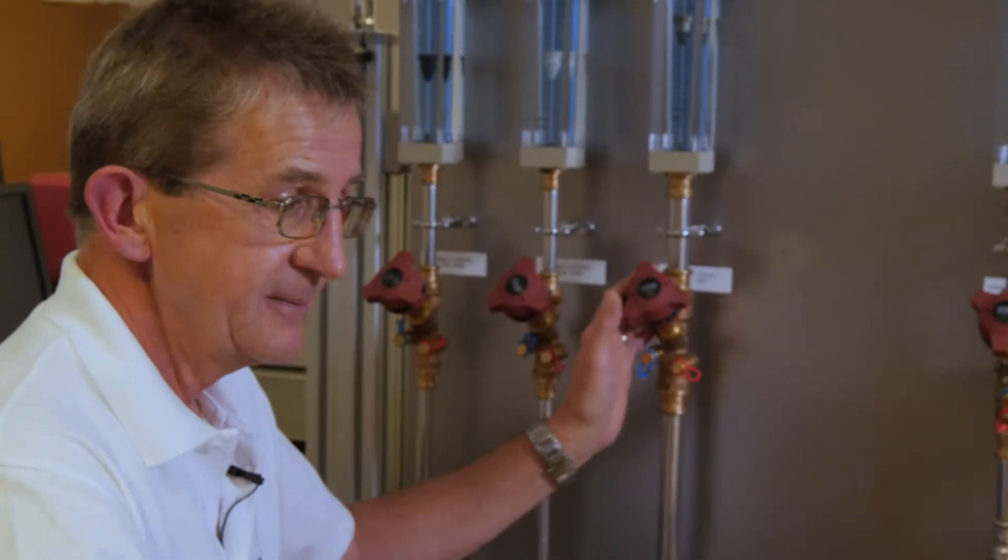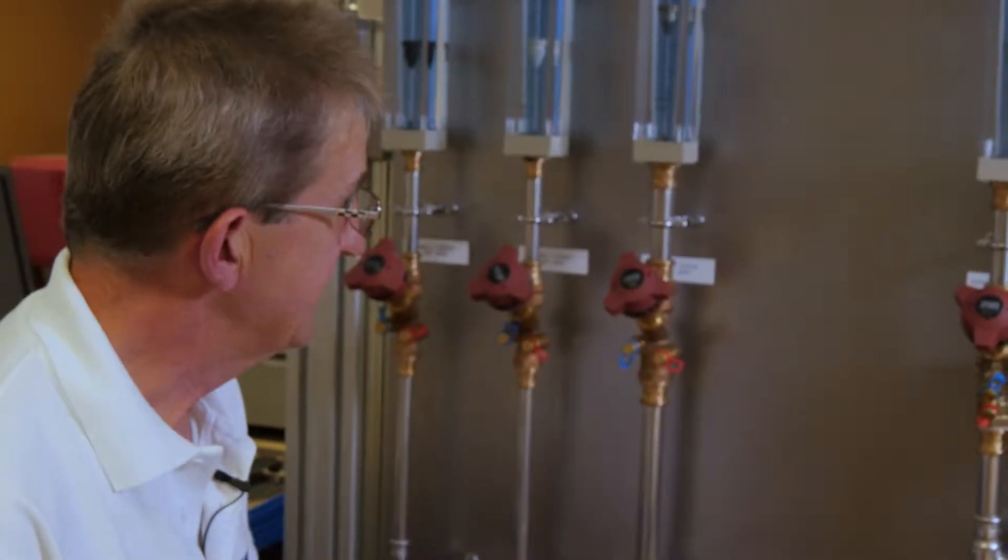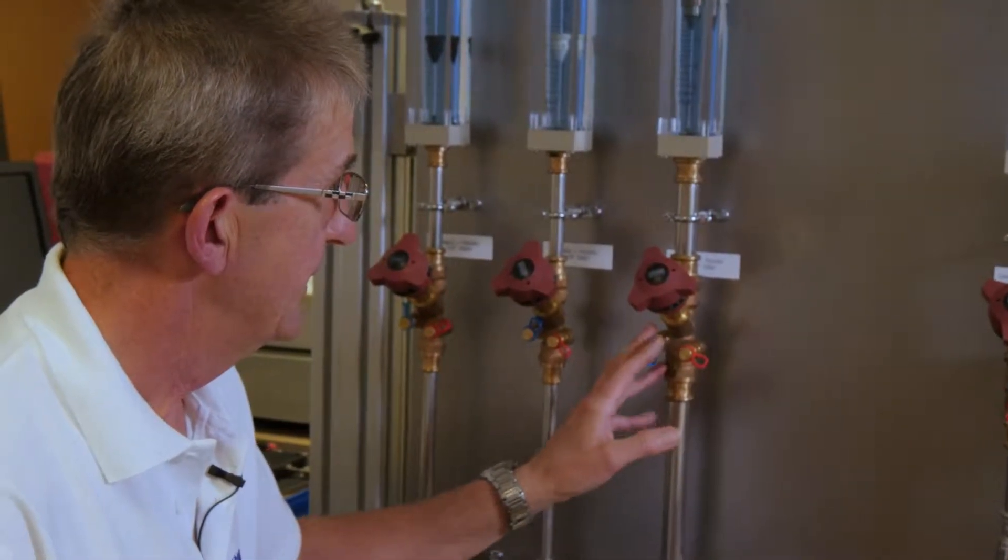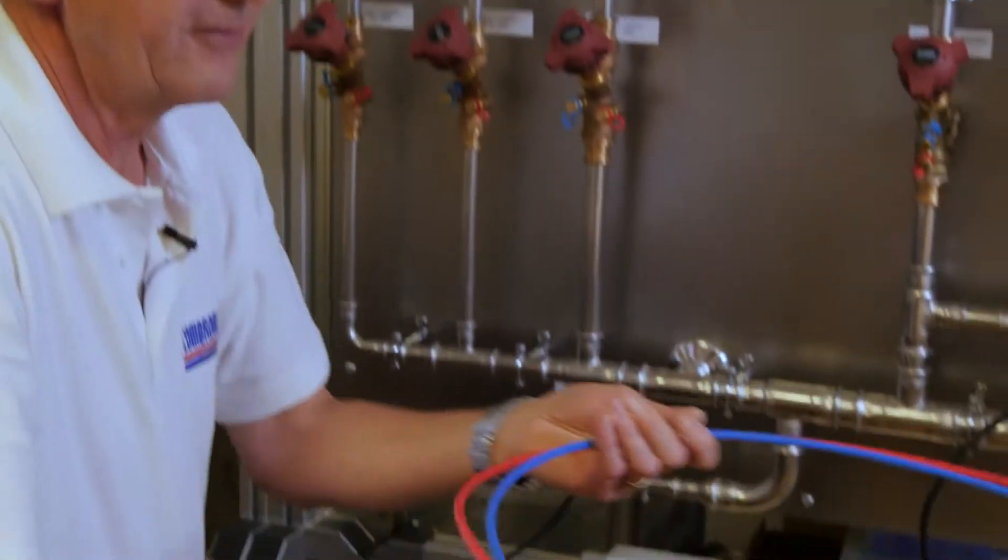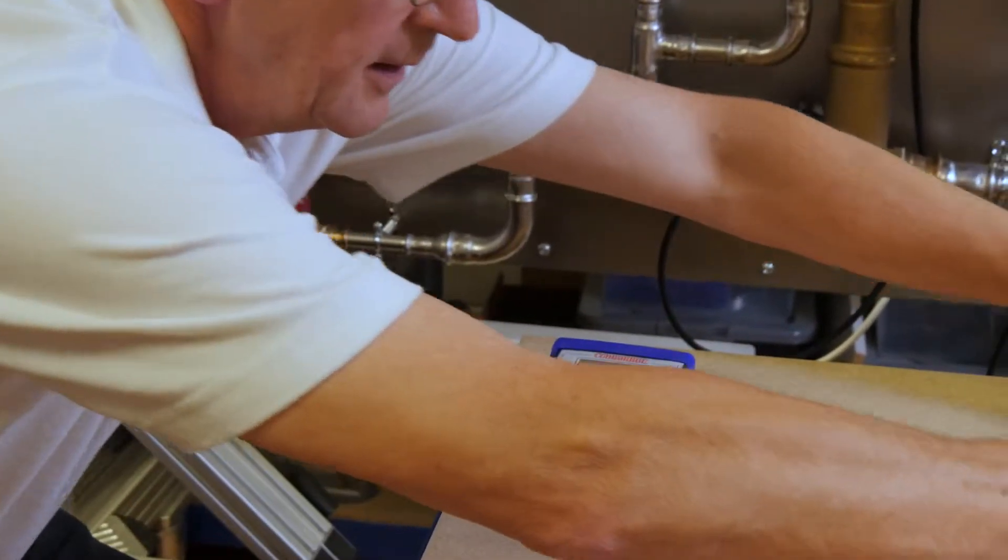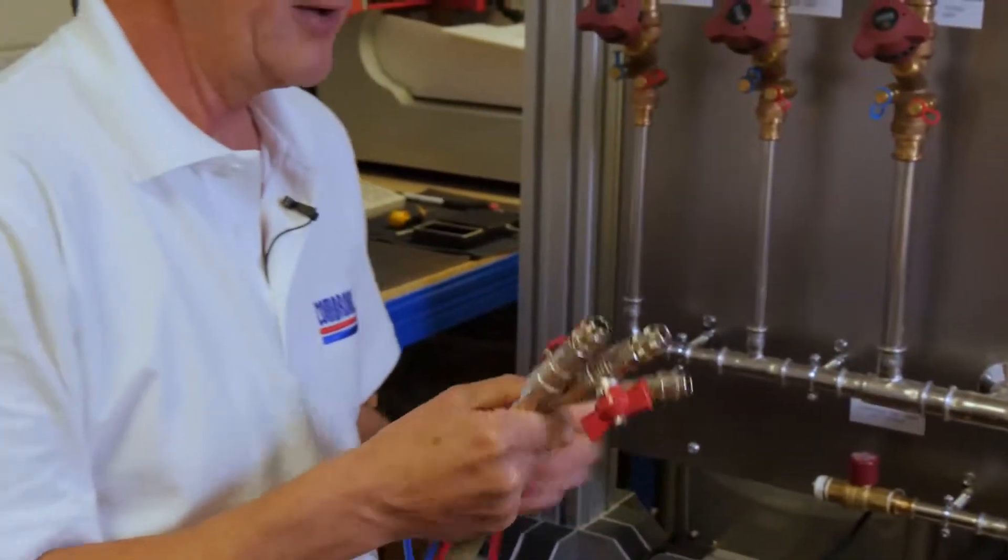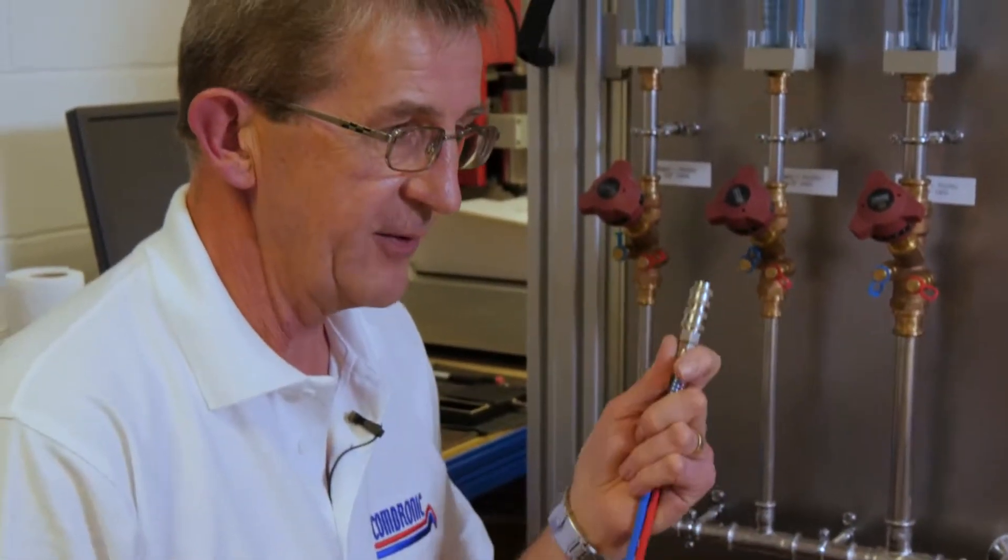So we're at our valve and we need to connect our hoses to the valve. So we take our hoses from our kit and we can see that on one end we have isolating valves and on the other end we don't.